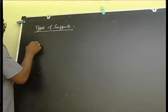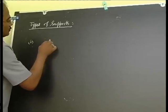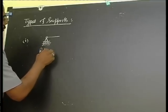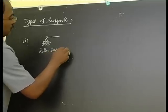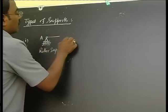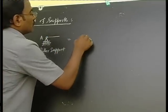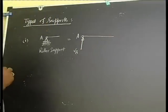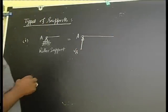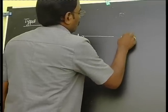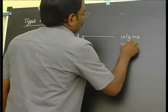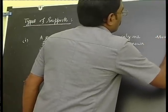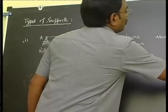Roller support - this can be equated as vertical reaction only. The movement in the downward direction is restricted. It has only one unknown: vertical movement downward is restricted.